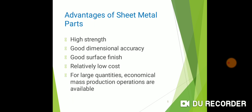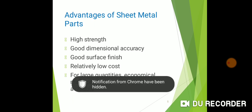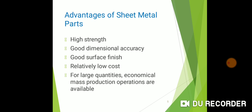Advantages of sheet metal operation: first one, high strength and good dimensional accuracy, because with one press a large number of production is possible in this process. Good surface finishing, no additional operation is required. Relatively low cost, large quantities, economical and mass production operations are available in this working process.